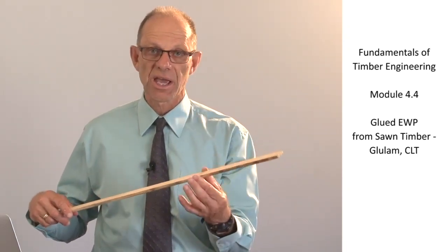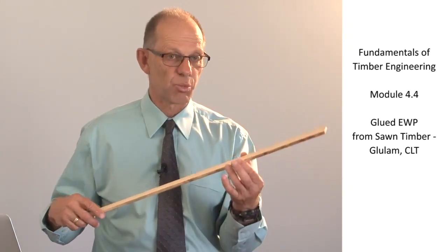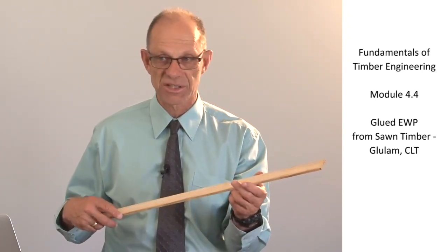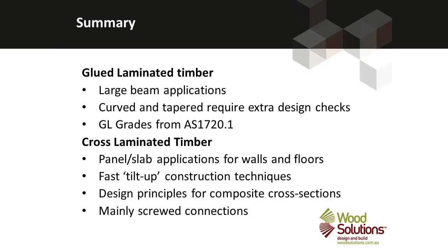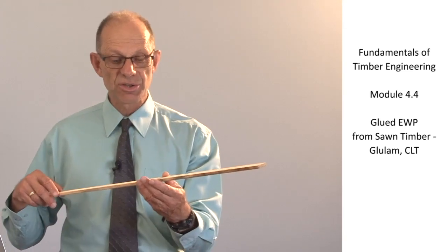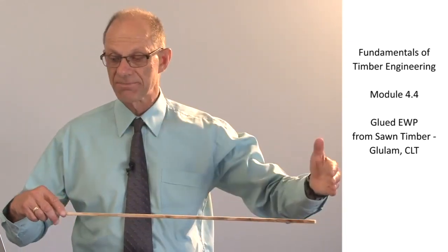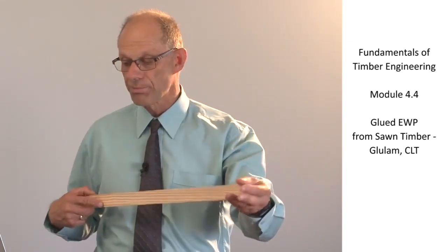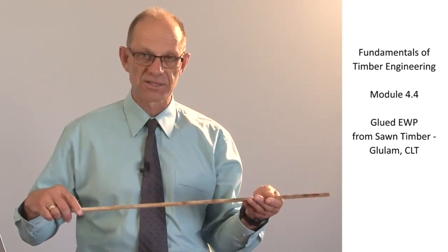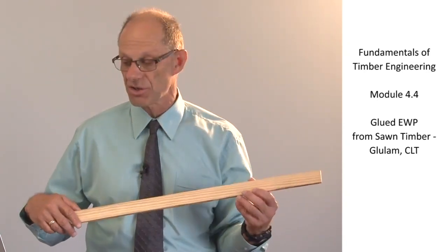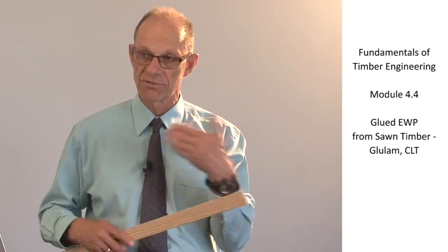The glulam grades and glulam design methods are well documented in AS1720.1. Cross laminated timber can be designed using other sources — European and North American guidebooks for CLT design. It is suitable for large slabs, floor panels and wall panels. Its fast construction technique means it is a cost-effective way of using large quantities of lightweight timber in a structural system.